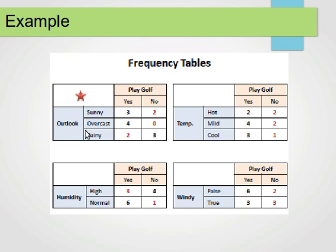From the frequency tables, for Outlook we have three categories: Sunny, Overcast, and Rainy. For Sunny we have three yeses and two nos; for Overcast, four yeses and zero nos; for Rainy, two yeses and three nos. For Humidity, we have High and Normal: for High, three yeses and four nos; for Normal, six yeses and one no. We build the frequency table for each attribute against the class.